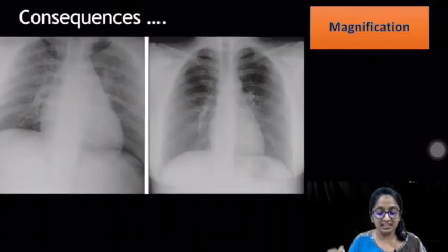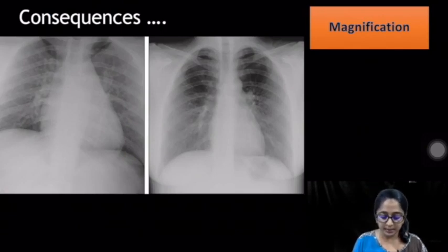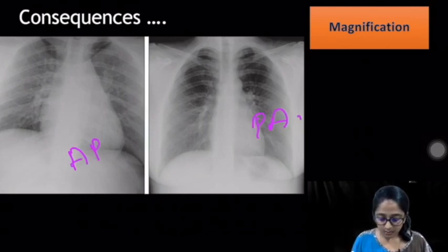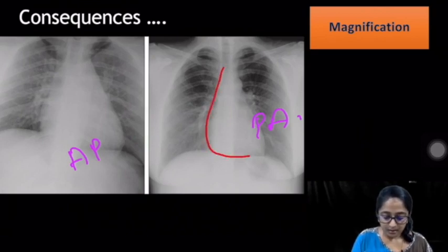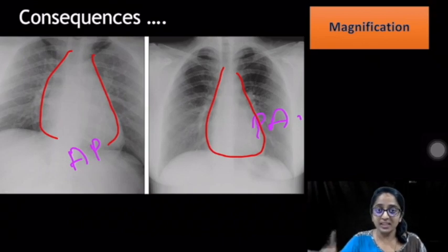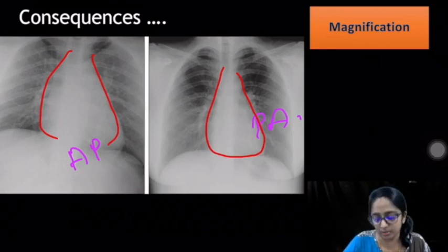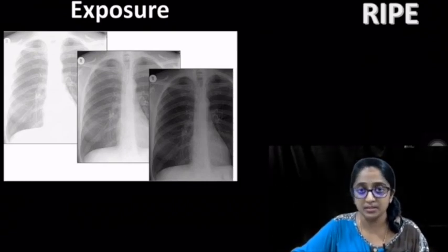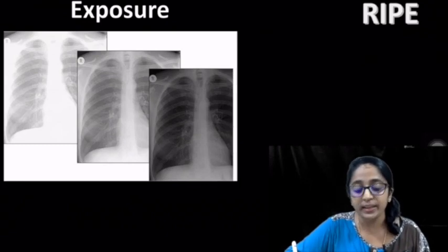Looking at the consequences of magnification — comparing an AP film and a PA film, the heart appears magnified in the AP radiograph. The key take-home point: do not comment on cardiac size in an AP radiograph.